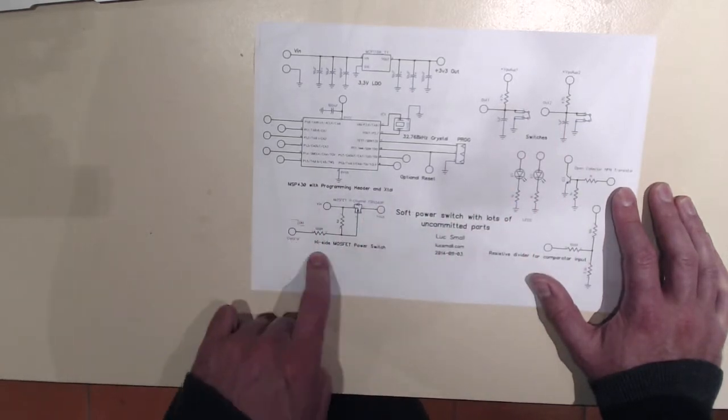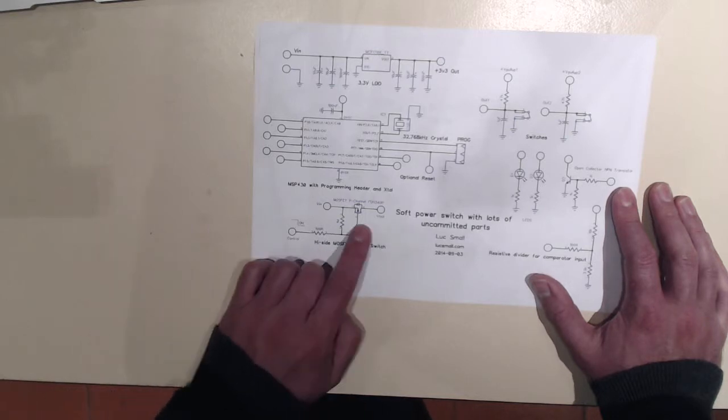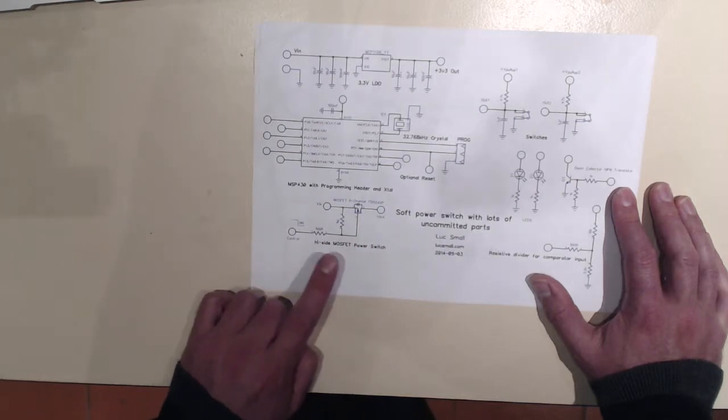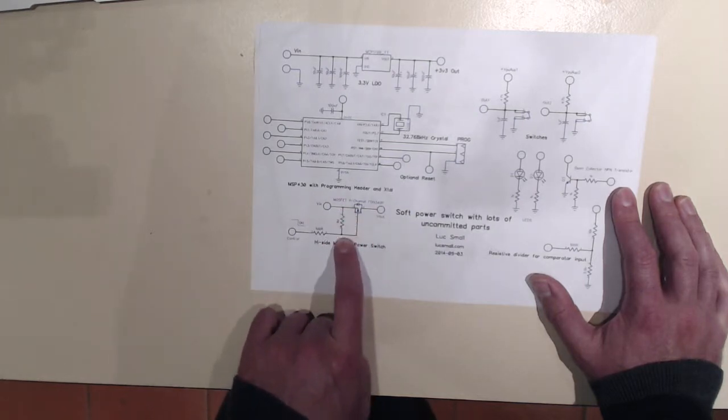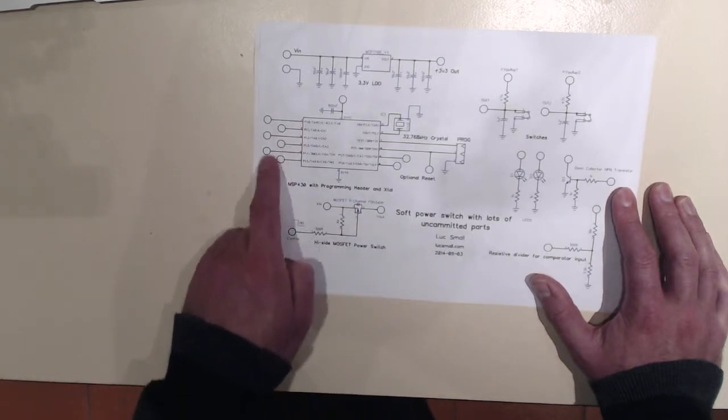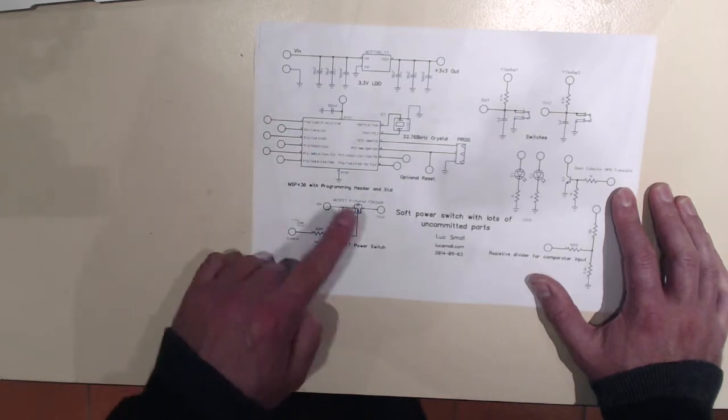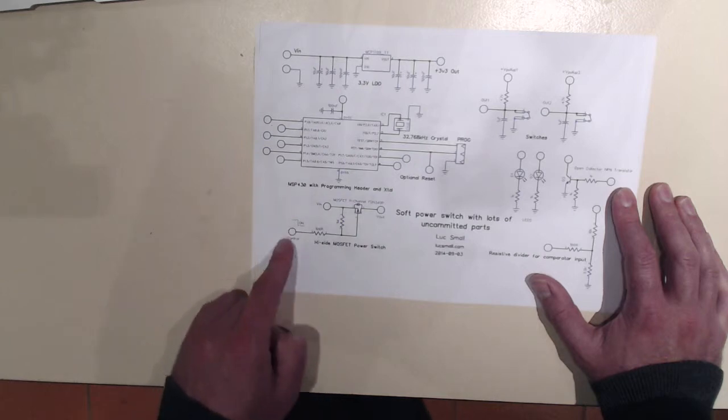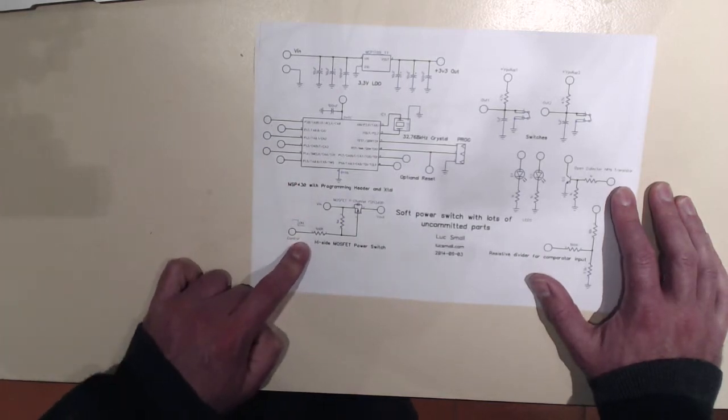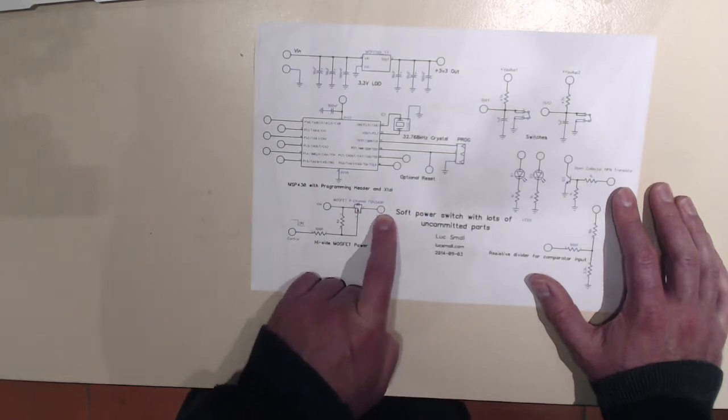There's then a high side MOSFET driver here to switch loads on and off. It's a logic level MOSFET, the P-channel FDN340P. I believe it's from Fairchild. And basically it's got a pull up resistor here just to ensure that it's in the off state when the outputs from the microcontroller are in high impedance. But then you can pull the control pin low using one of the microcontroller outputs and then the load which would usually be connected here can be switched on.